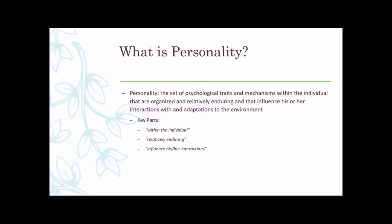The next key part is 'relatively enduring,' meaning personality traits stay pretty constant over time once they're developed. A word you'll see frequently with personality traits is 'characteristic' — when something is characteristic of a person, it's consistently defining of that person. Are you generally easygoing and relaxed, or tense and controlling? These would be characteristic measures of your disposition. Your textbook gives a simpler definition: personality is an individual's characteristic pattern of thinking, feeling, and acting.